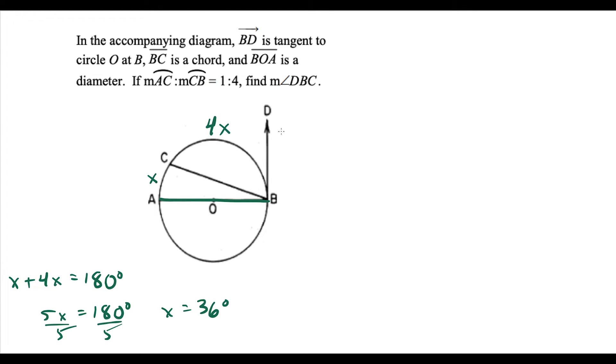To find the measure of angle DBC, we look at chord CB and tangent DB. We're targeting the 4x here, so 4 times 36 degrees is 144 degrees.